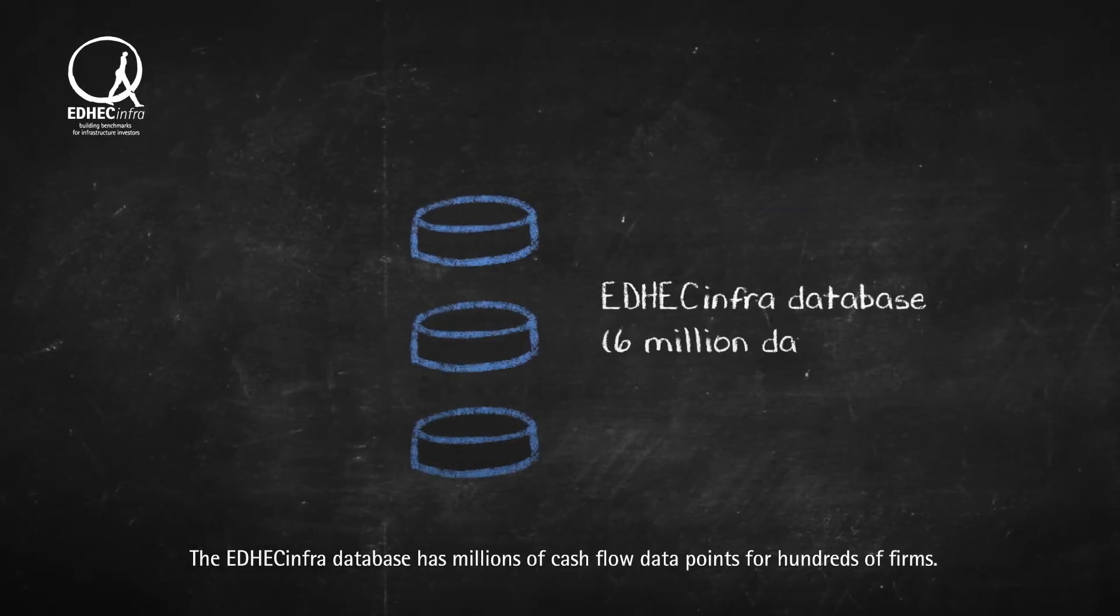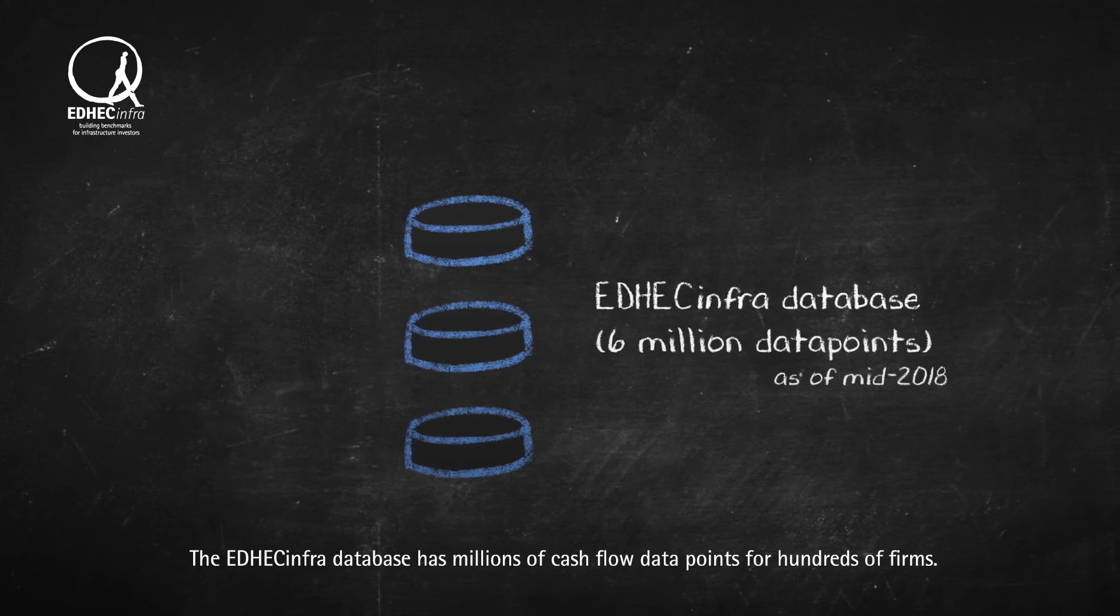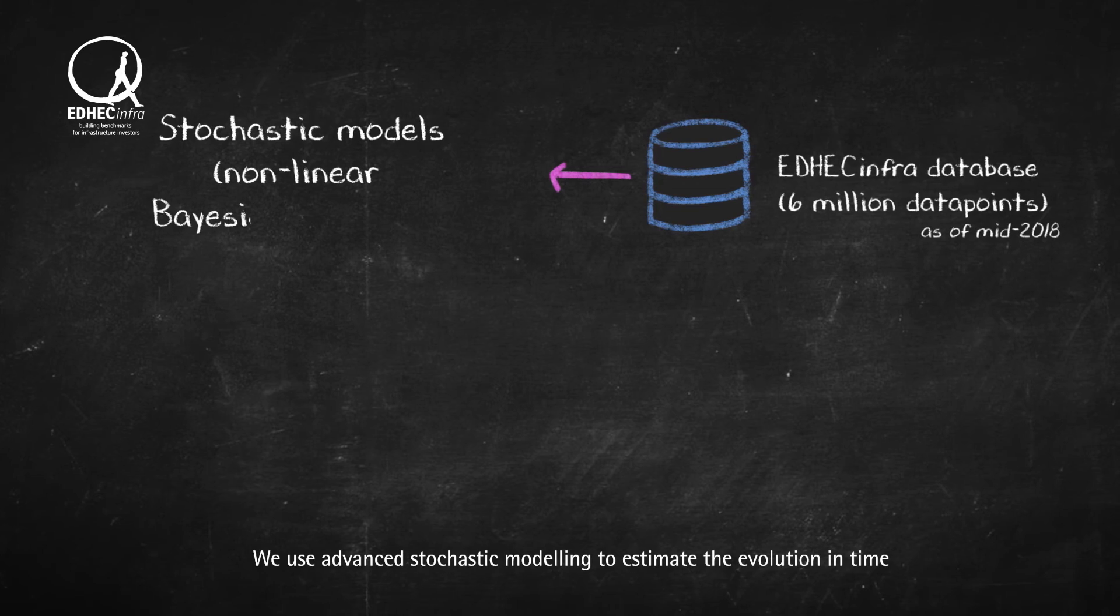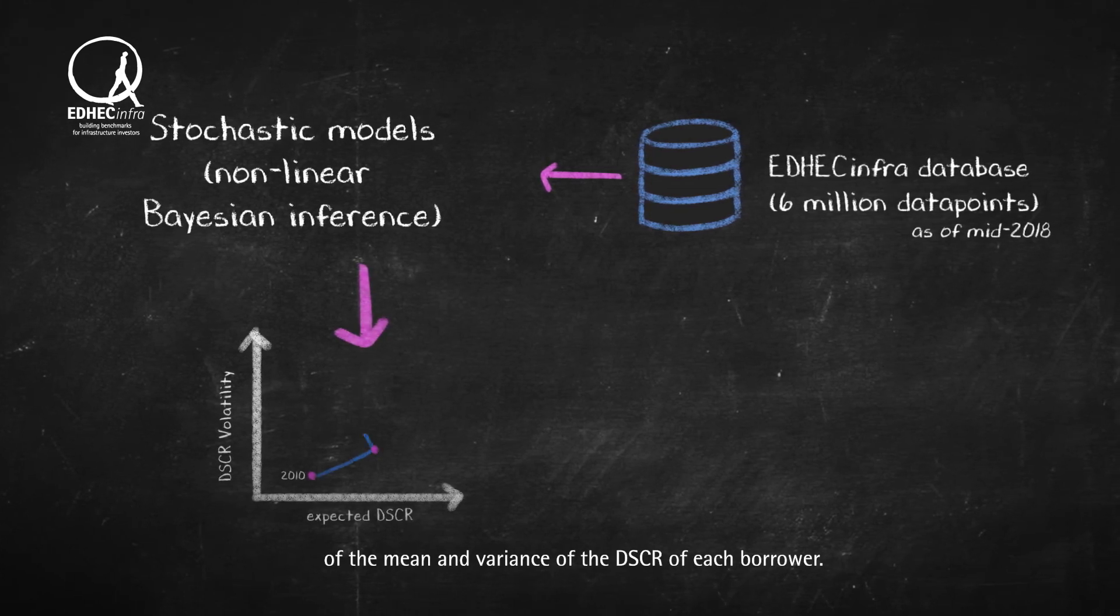The EtikInfo database has millions of cash flow data points for hundreds of firms. We use advanced stochastic modeling to estimate the evolution in time of the mean and variance of the DSCR of each borrower.